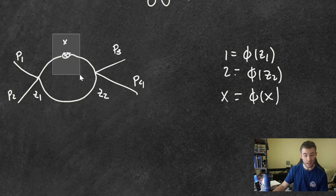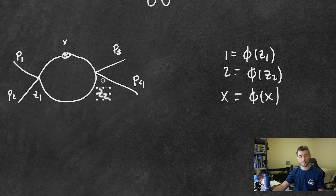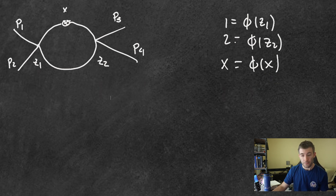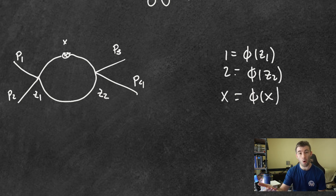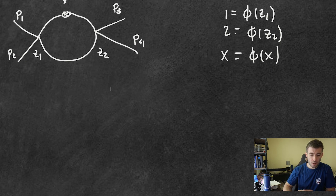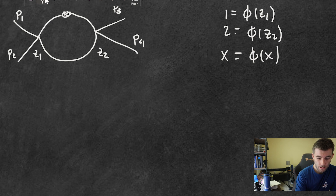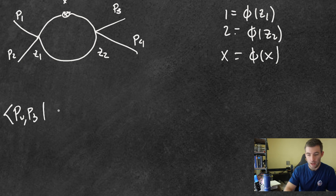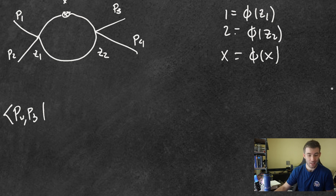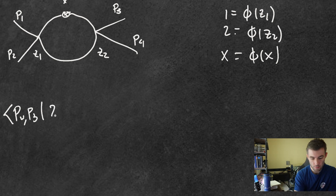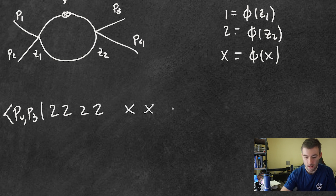This is a kind of hybrid representation with z₁ and z₂ being the locations of the vertices being integrated over. To calculate this Feynman diagram I'd have to also account for all of the equivalent ways of arriving at it. I can start with the matrix element with p₄, p₃, using 1, 2, and x as shorthand for the fields as functions of z₁, z₂, and x — there are four fields for each vertex.